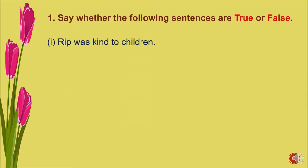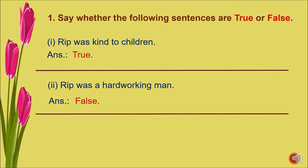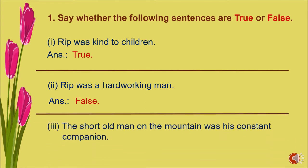Next section is Let's Read, question one: say whether the following sentences are true or false. Number one — Rip was kind to children: true. Number two — Rip was a hard-working man: false, he was a lazy man. Number three — the short old man on the mountain was his constant companion: false.